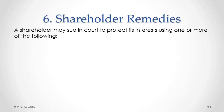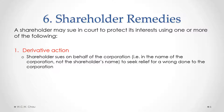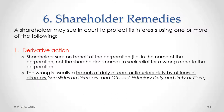Sometimes something happens with a corporation that a shareholder disagrees with, or it has a negative impact on particular shareholders, especially minority shareholders. There are a number of different remedies available to a shareholder. The first is called a derivative action. In a derivative action, the shareholder would sue on behalf of the corporation — suing in the name of the corporation, not the shareholder's name — to seek relief for a wrong done to the corporation. The wrong could be either a breach of a duty of care or fiduciary duty by the officers or directors, which we'll discuss in more detail a little later on.